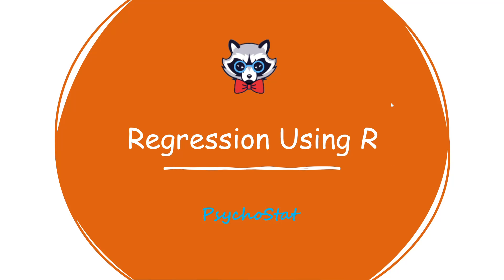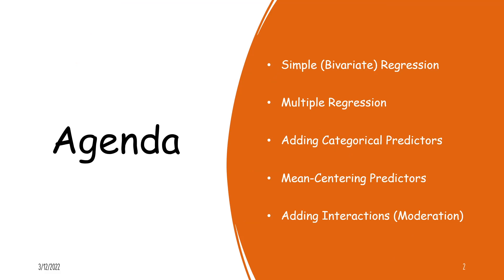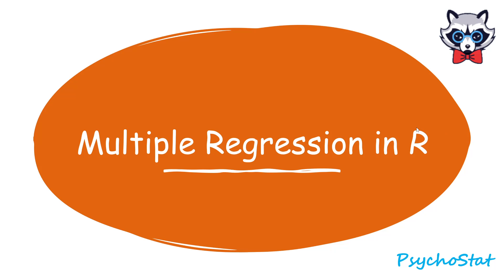Welcome everybody, thanks for watching this video. This is the second video in the five-part regression using R series. As a recap, the first video covered simple regression; this one will cover multiple regression. Future videos will cover adding categorical predictors, mean centering predictors, and adding interaction terms, also referred to as moderation. The first half of this video covers the code in R, and the second portion focuses on interpreting and writing up the results.